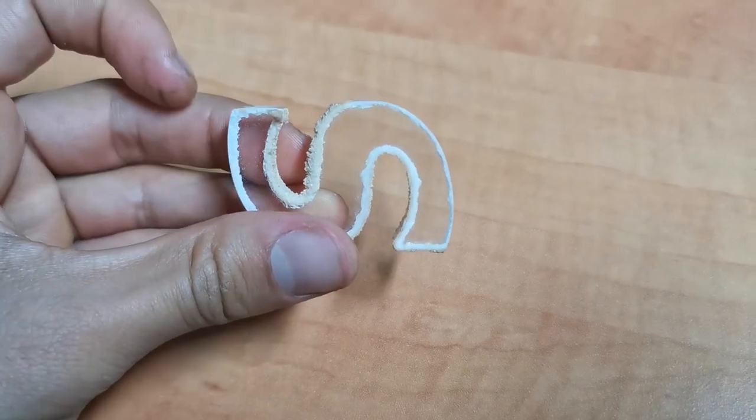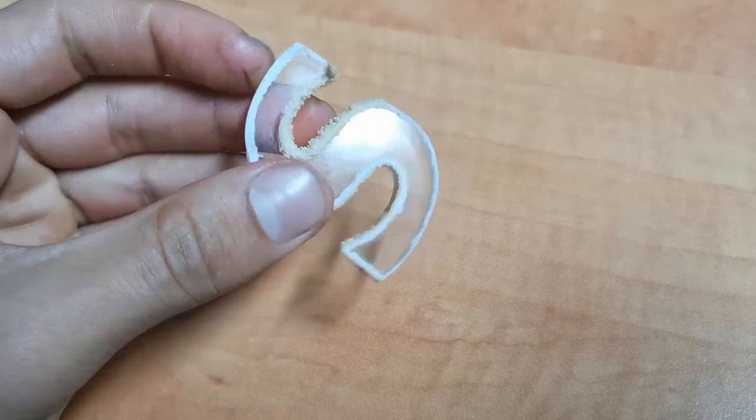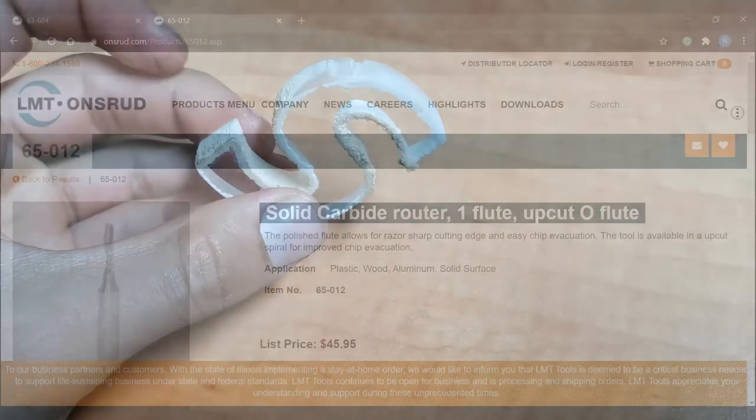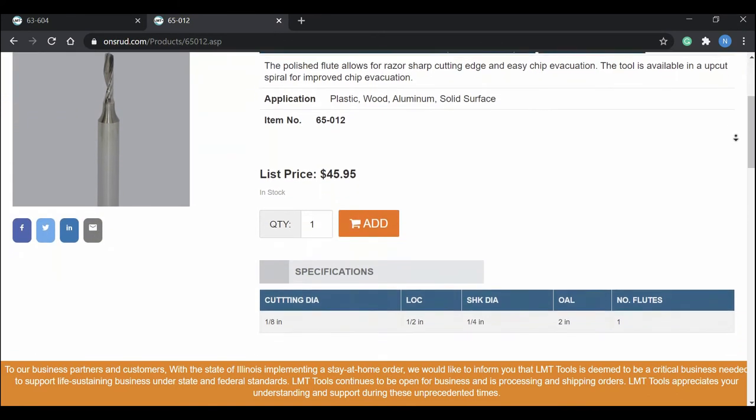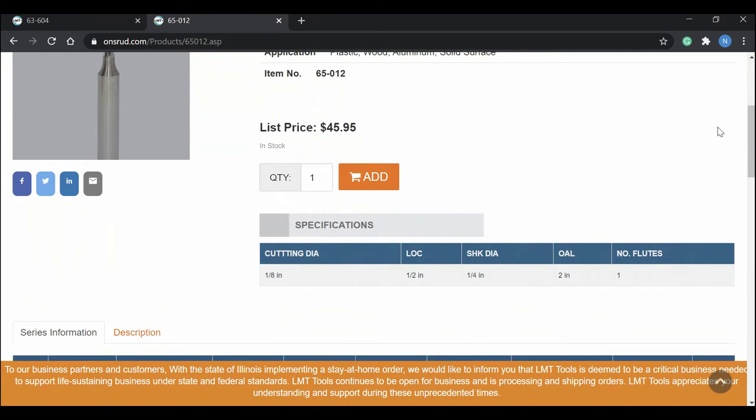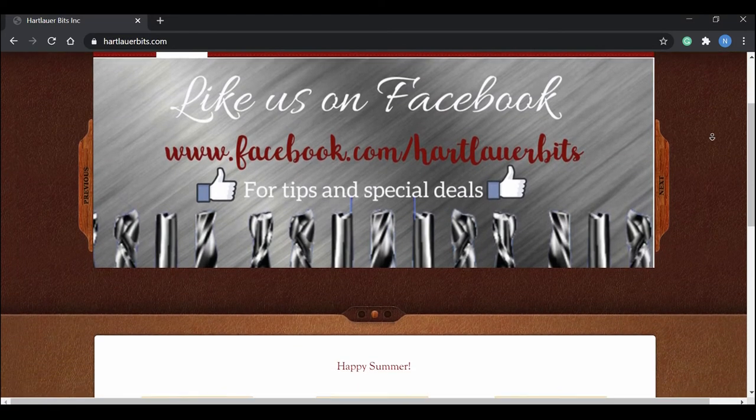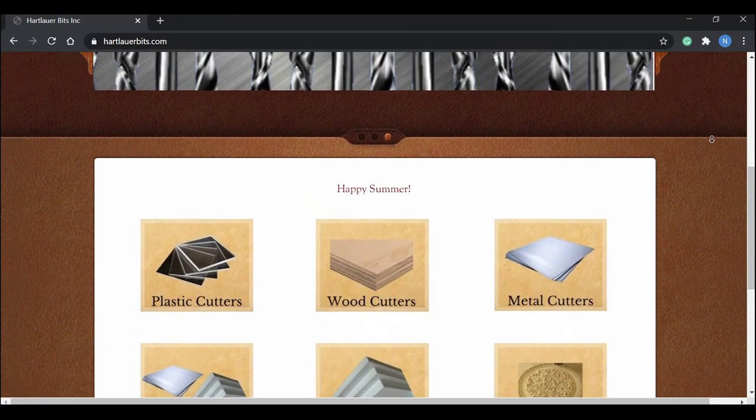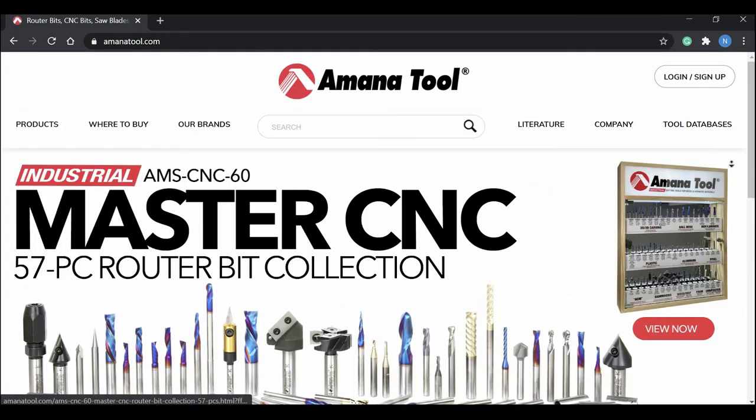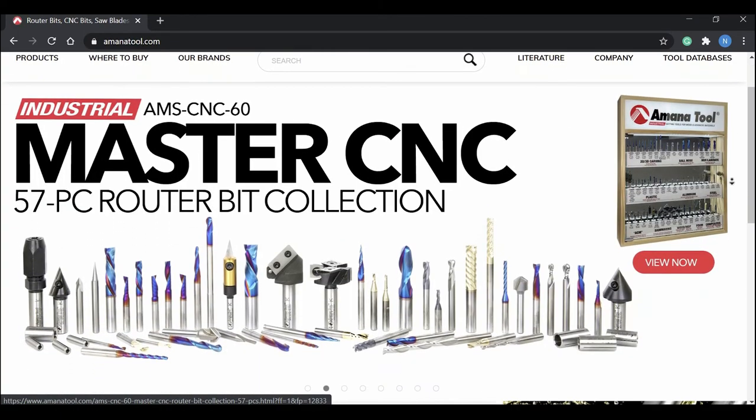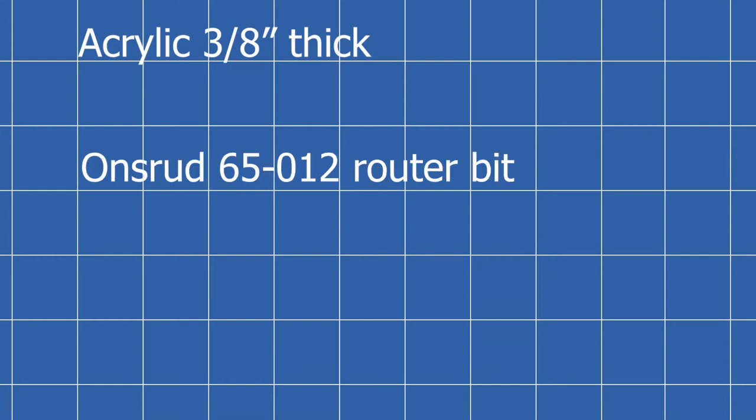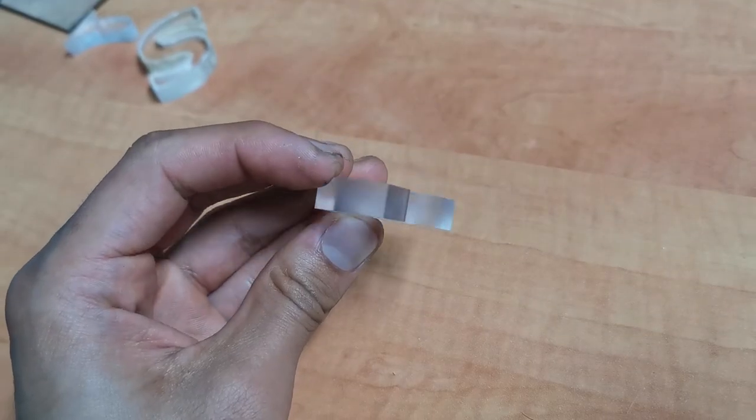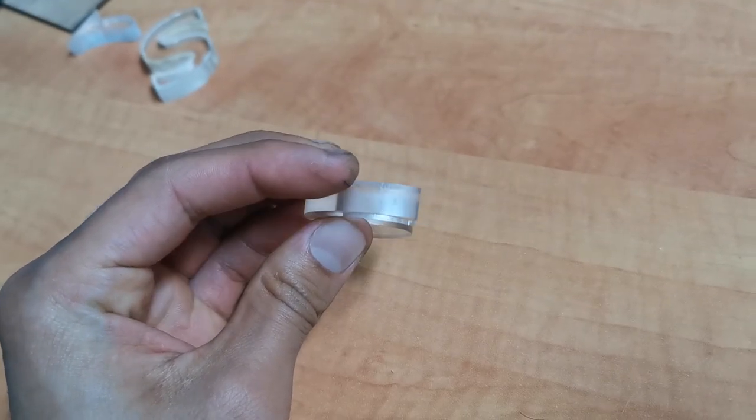So we decided to get a good quality router bit from Onsrud. These are specifically designed for hard plastics. These are more expensive than generic bits from China however the results were amazing. This video is by no means sponsored by Onsrud. There are other reputable brands for router bits such as Hart Lower and Amana tools but we found this convenient as they were available on Amazon at the time we ordered. As soon as we put on the new router bit we noticed that the finishing changed from rough and unacceptable to smooth and visually appealing.